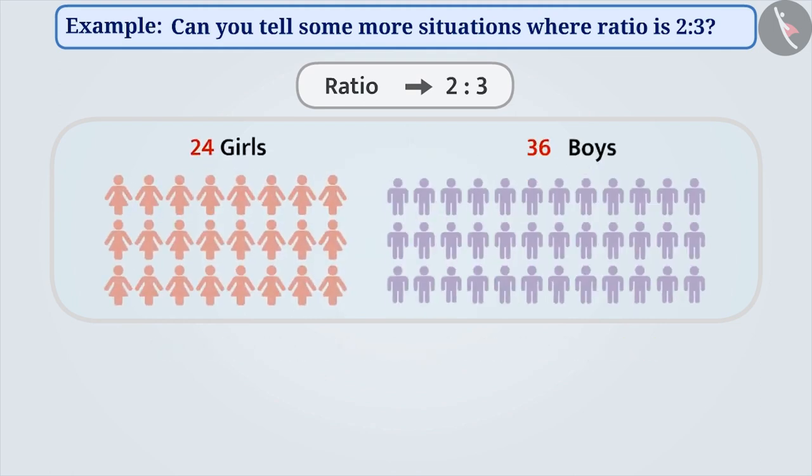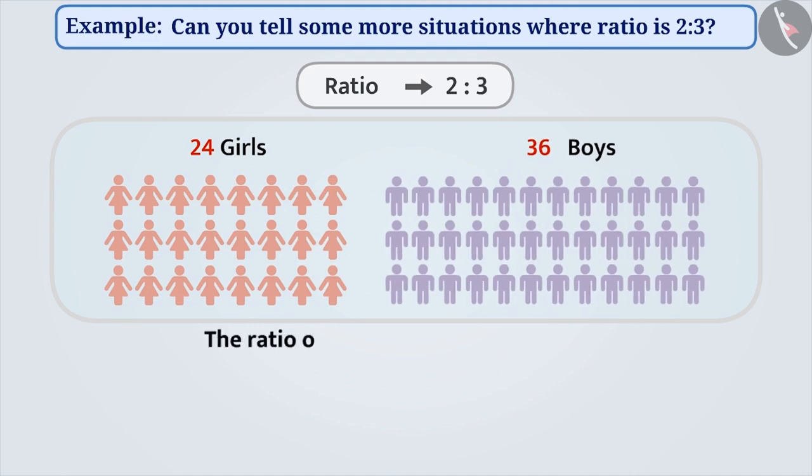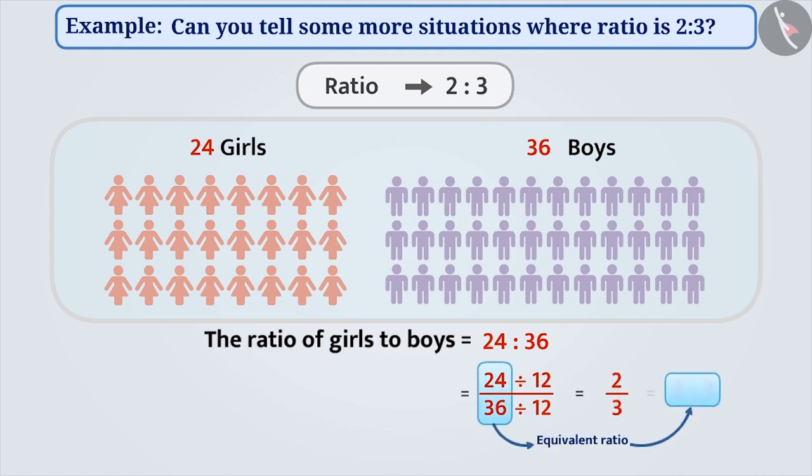If there are 24 girls and 36 boys in a class, then the ratio of girls to boys is 24 is to 36. Upon dividing its numerator and denominator by 12, we will get the equivalent ratio of 24 is to 36 as 2 is to 3.